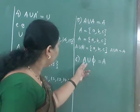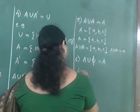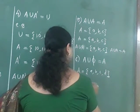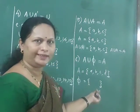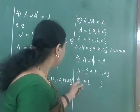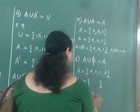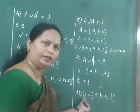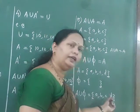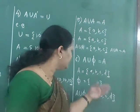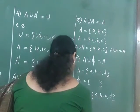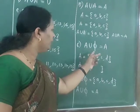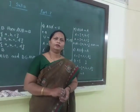The sixth property is A union empty set is equal to A. For example, if set A contains the letters A, B, C and D, and the empty set has no elements, then A union empty set contains the letters A, B, C and D. Therefore, here we get A union empty set is equal to A. So this is the sixth property.